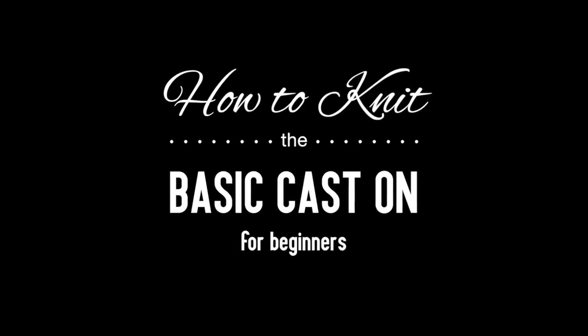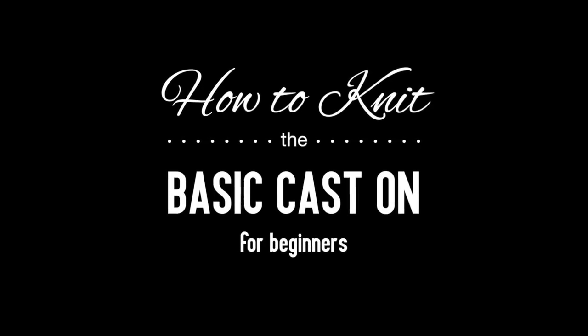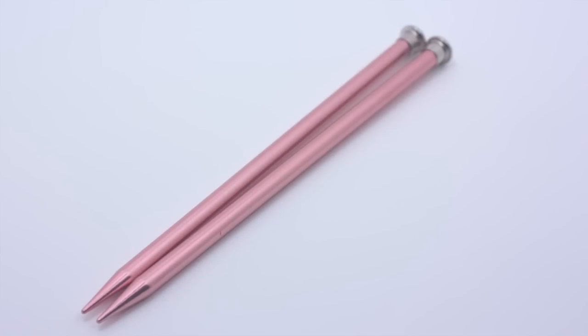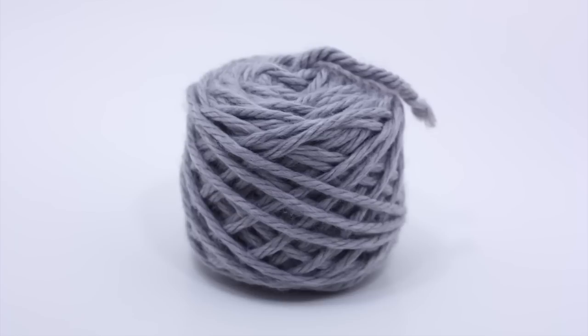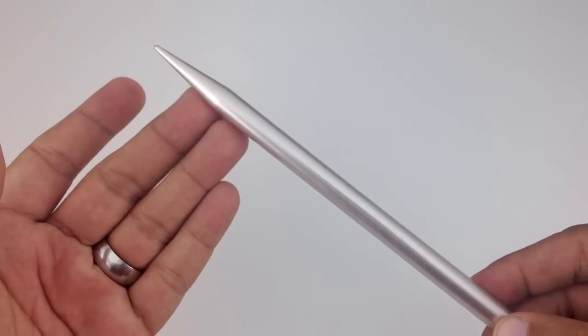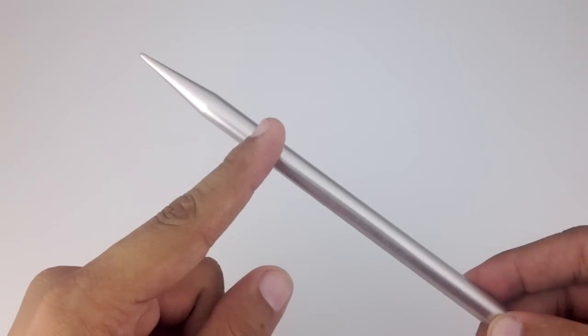Knitting 101: How to knit the basic cast on for beginners. For this tutorial you will need a pair of knitting needles and a ball of yarn. When you're starting your first project in knitting, you need to attach the yarn to the knitting needle in some way.